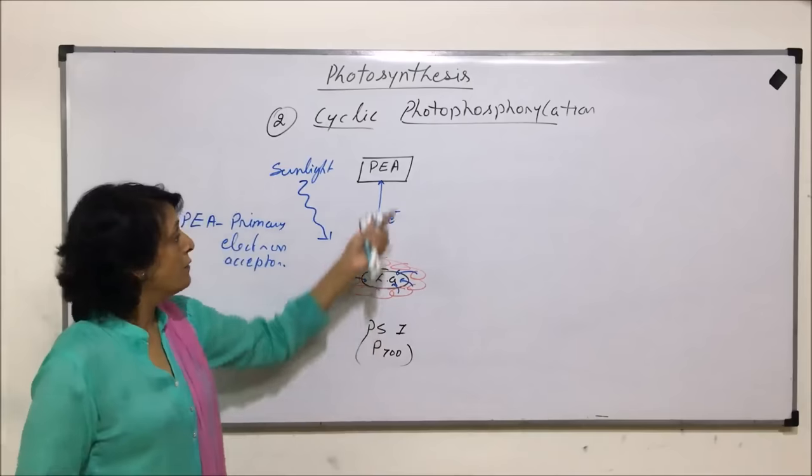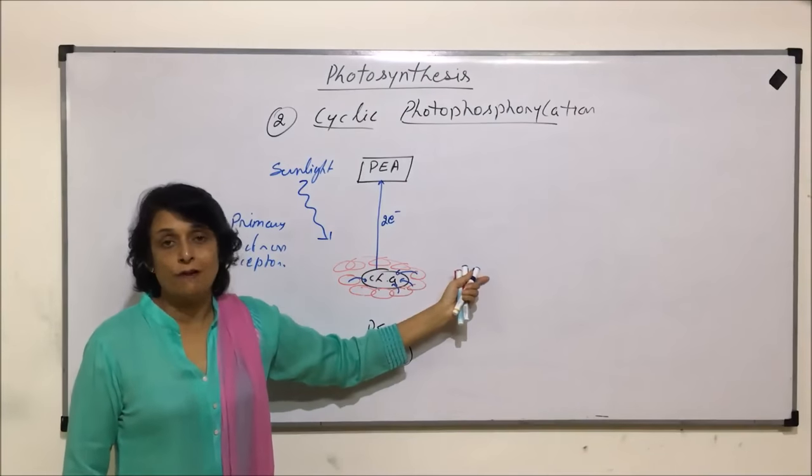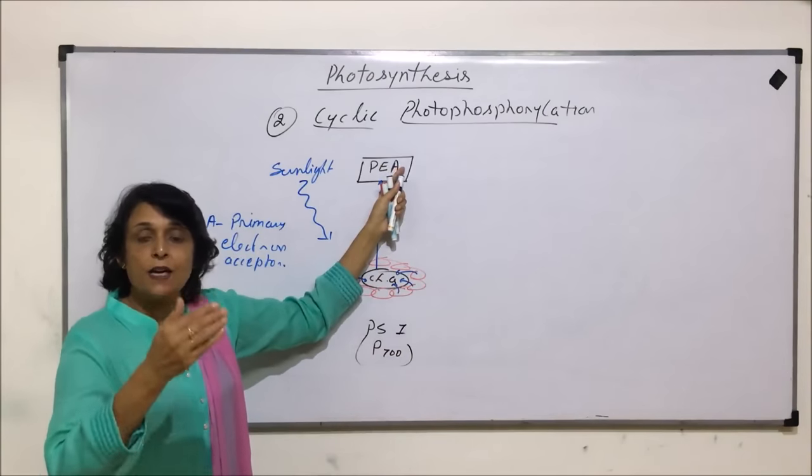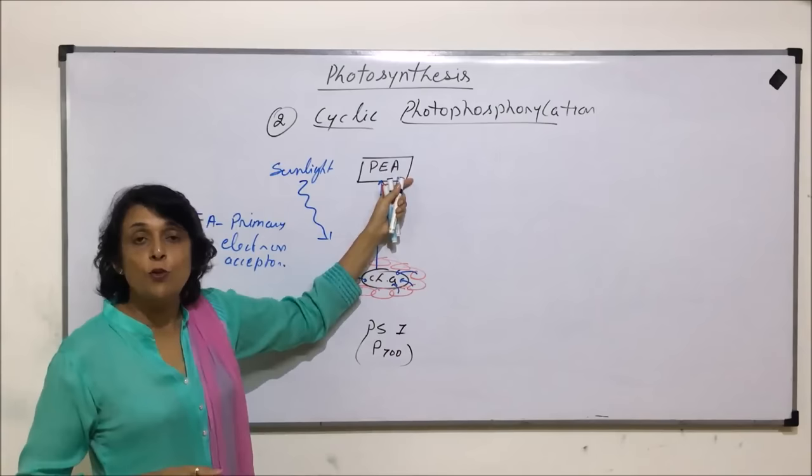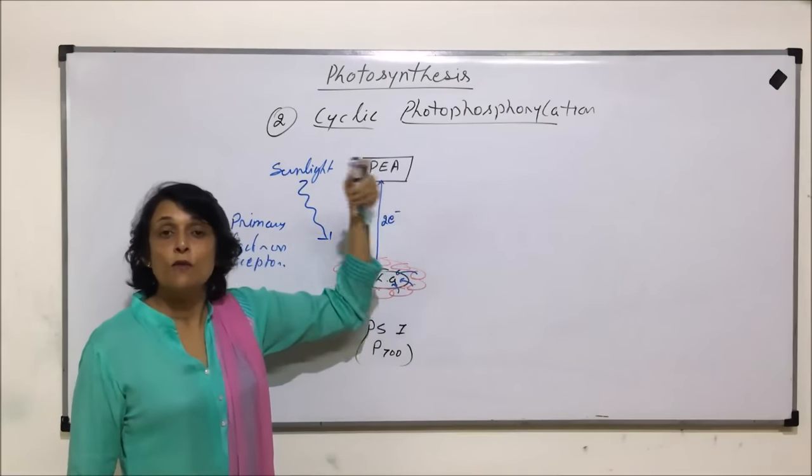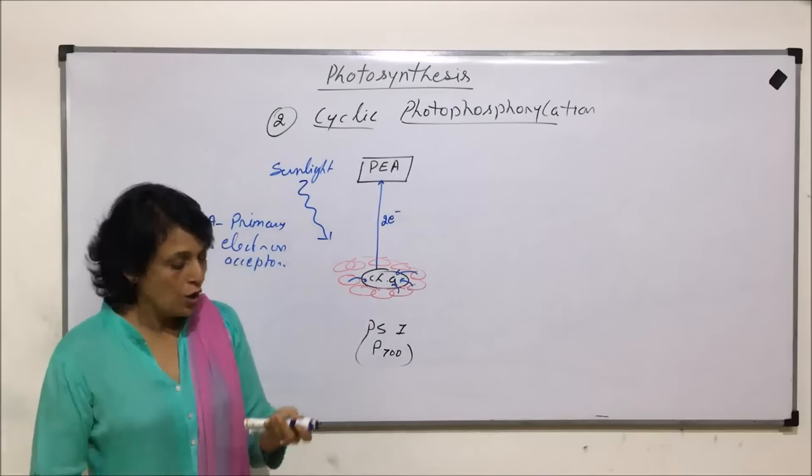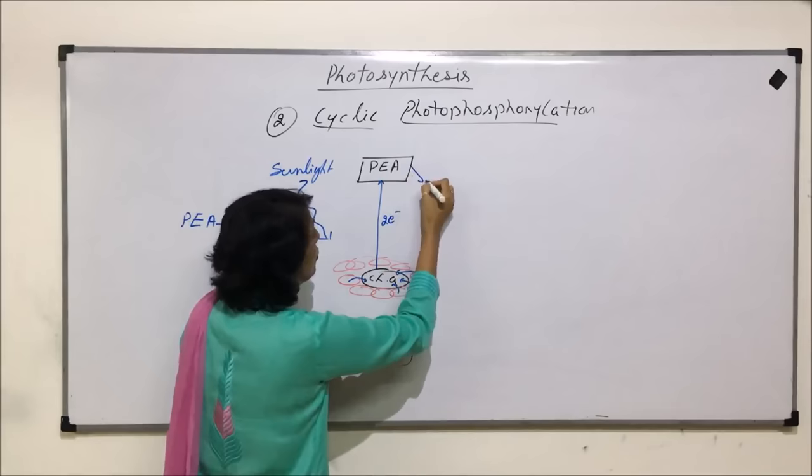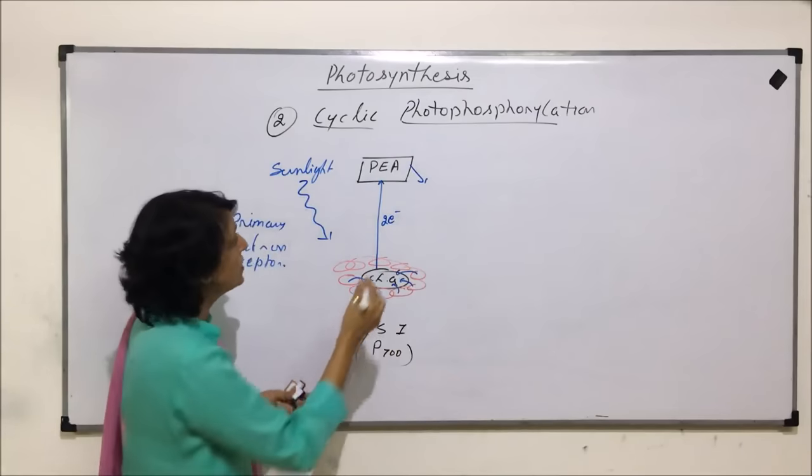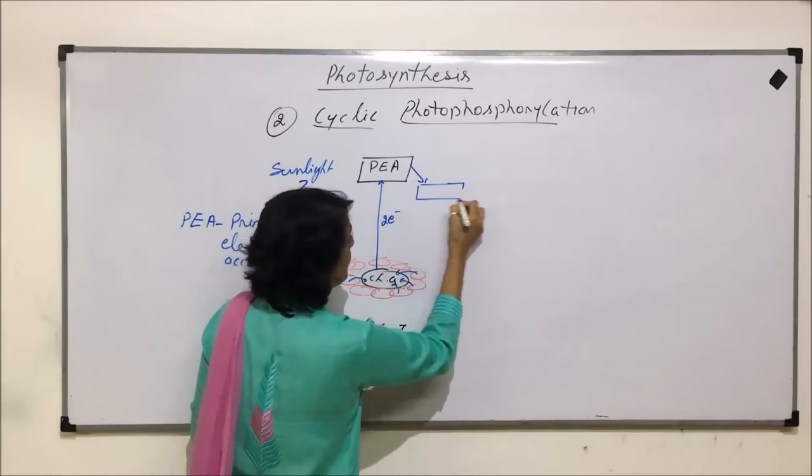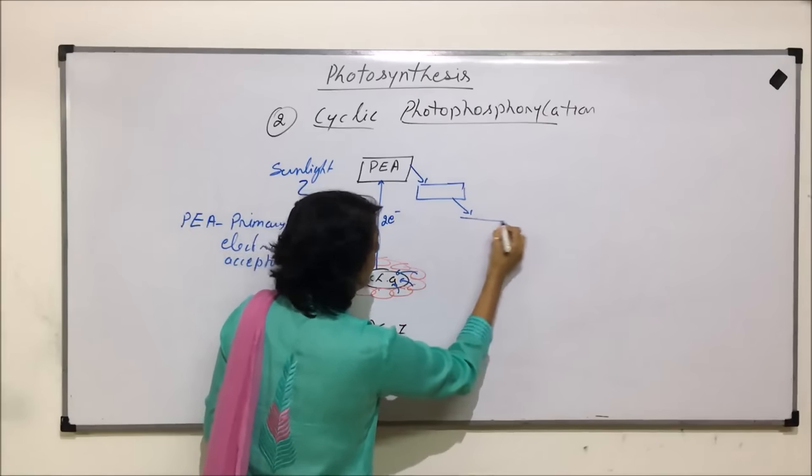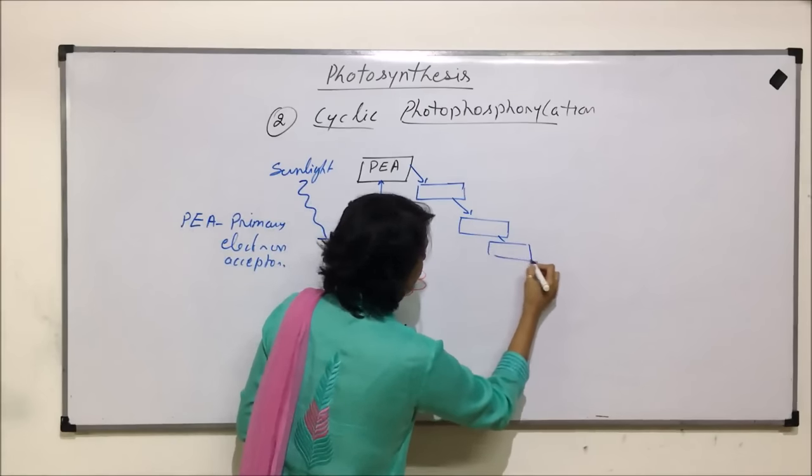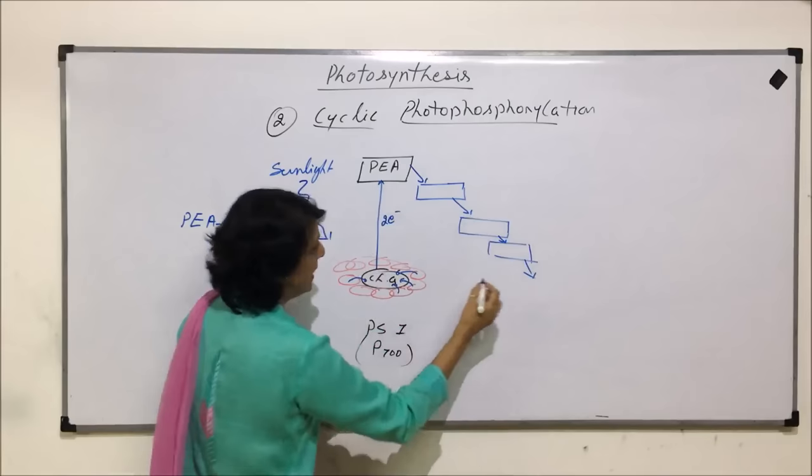Now, from here, this electron will move down the electron transport chain. Again, here it is at a higher energy level. When it comes down that electron transport chain, it is moving down the gradient from higher energy level to lower energy level. So, when this electron passes through these acceptors, there are four acceptors.